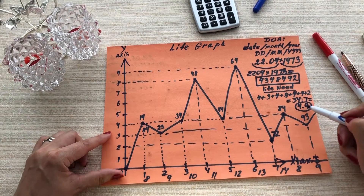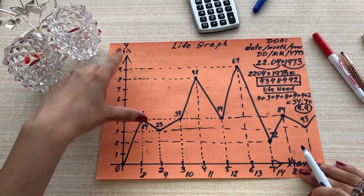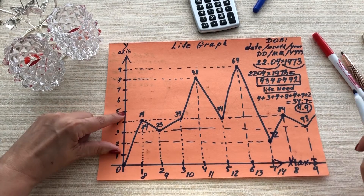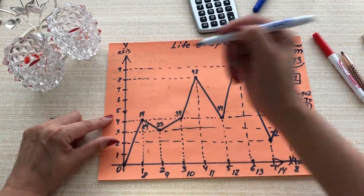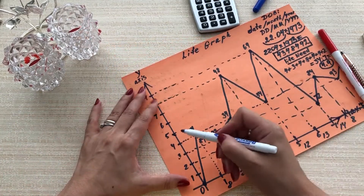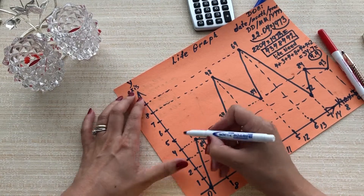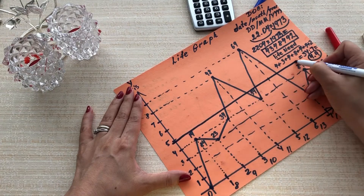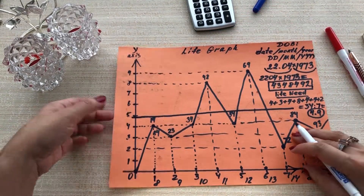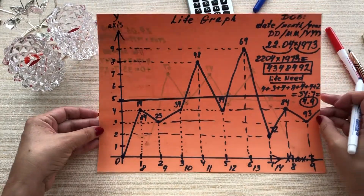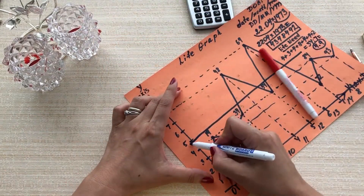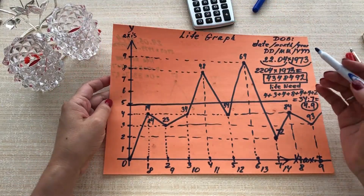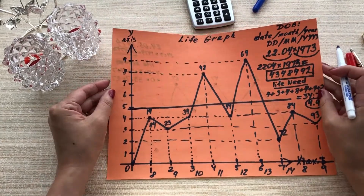4.9 is the number of your life need. Let's find this number on the y-axis. Since it's 4.9, it's almost 5 — it's going to be somewhere right here. Let's create the line of your life need. This is your life need — she's an absolutely successful person.